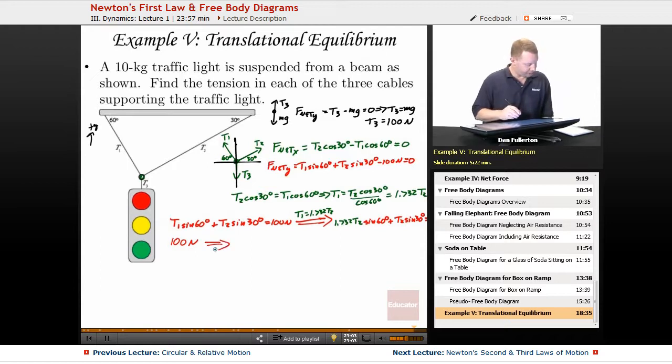Which implies then that when we do all that together I get 1.5 T2 plus 0.5 T2 equals 100 newtons. Therefore T2 must be equal to 50 newtons and once I've done that, if I know T2 is 50 newtons,